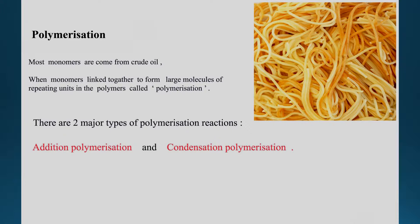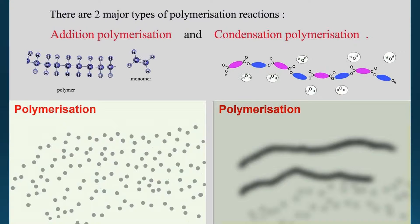Polymer and polymerization: most monomers come from crude oil, such as ethene. When these monomers link together, they form a large molecule of repeating units — we call it a polymer, and that process is called polymerization. There are two major types of polymerization. One type we have already learned is called addition polymerization, and now I'm going to focus on another type called condensation polymerization.